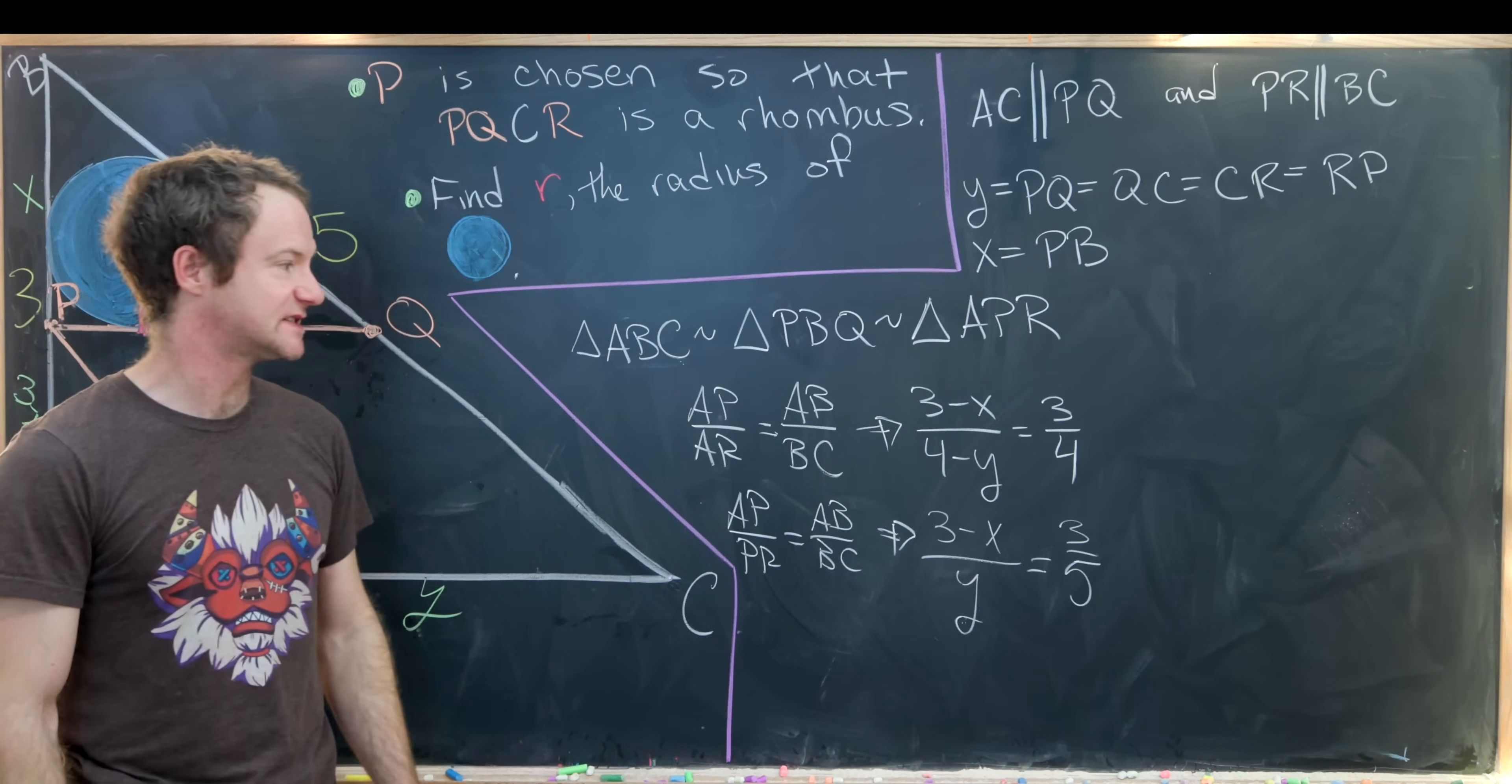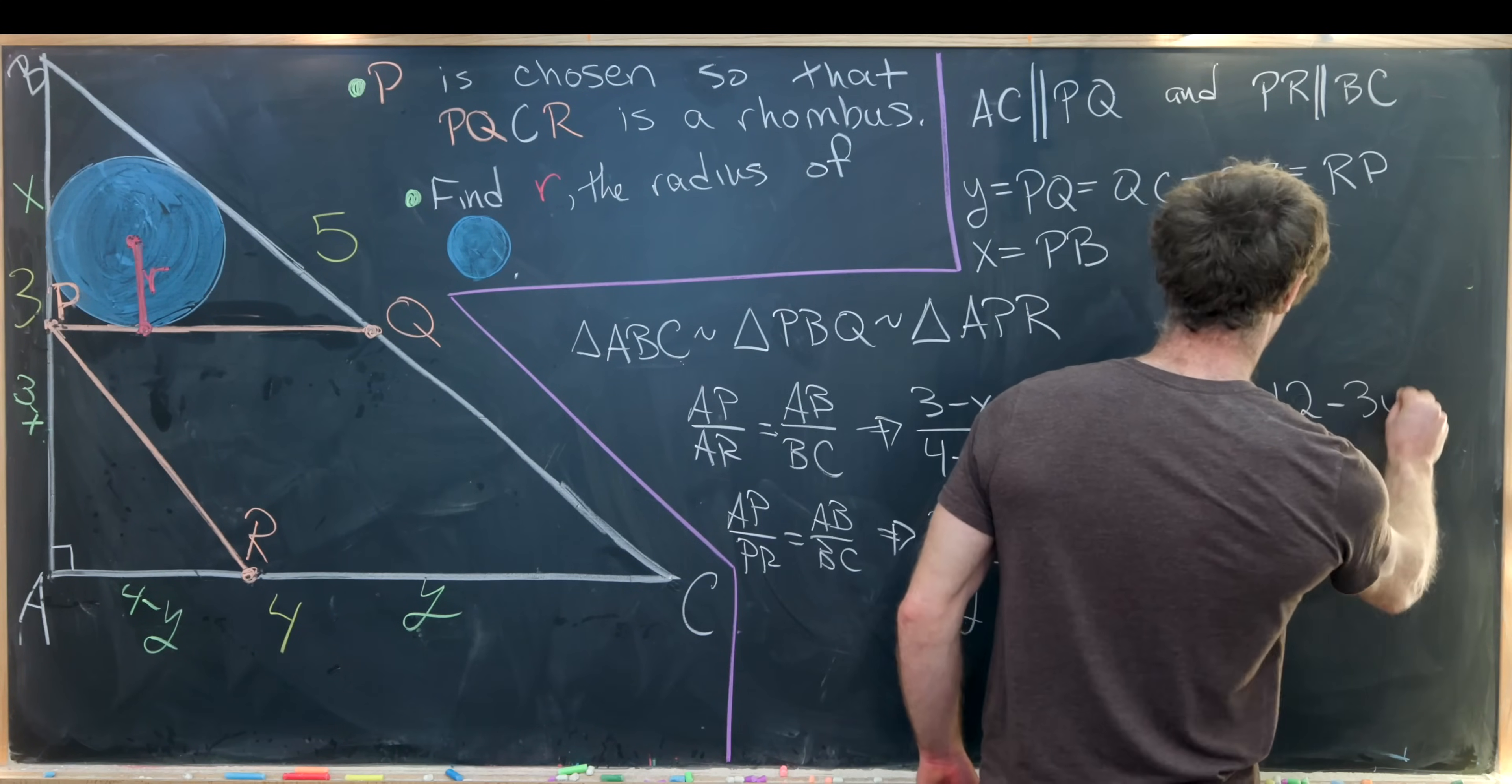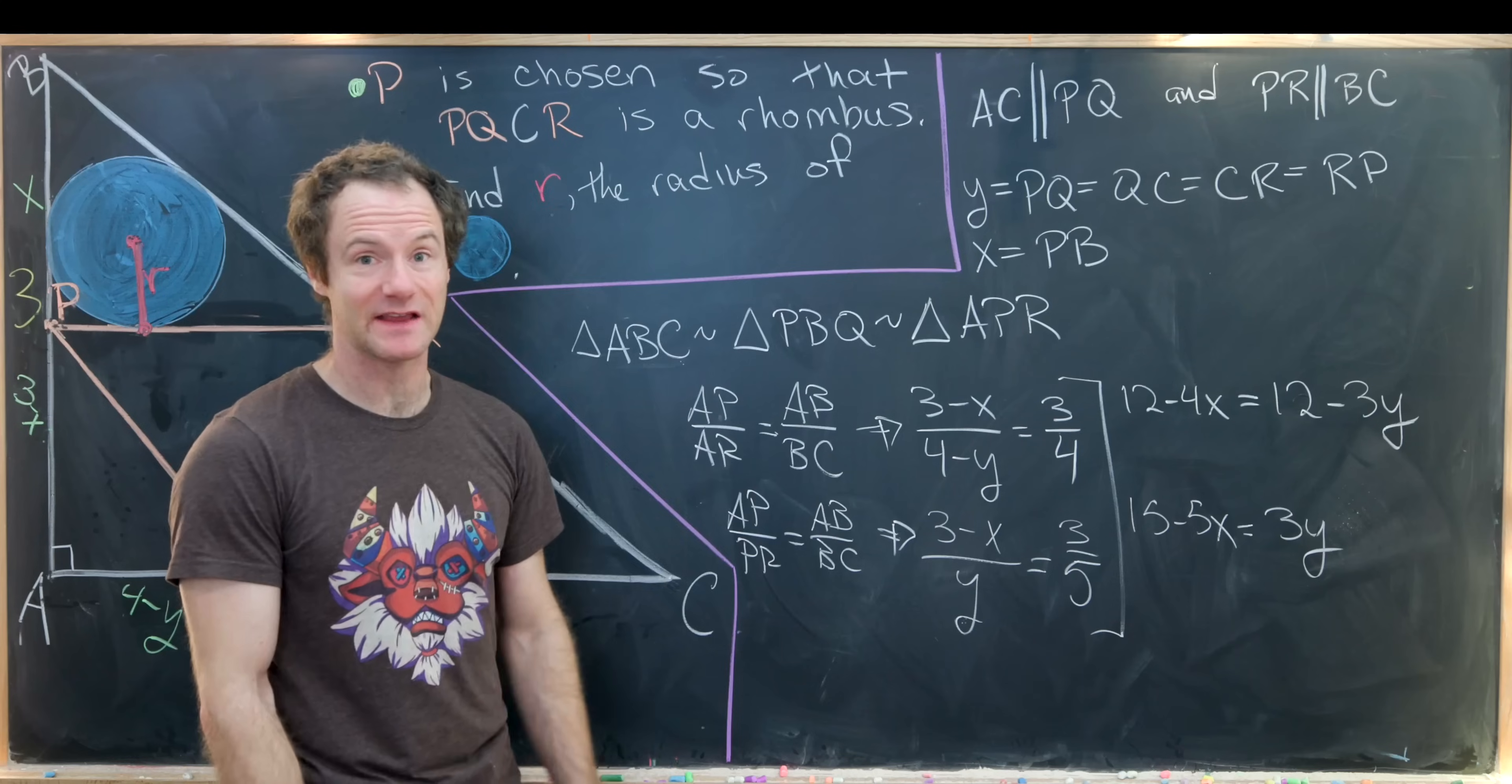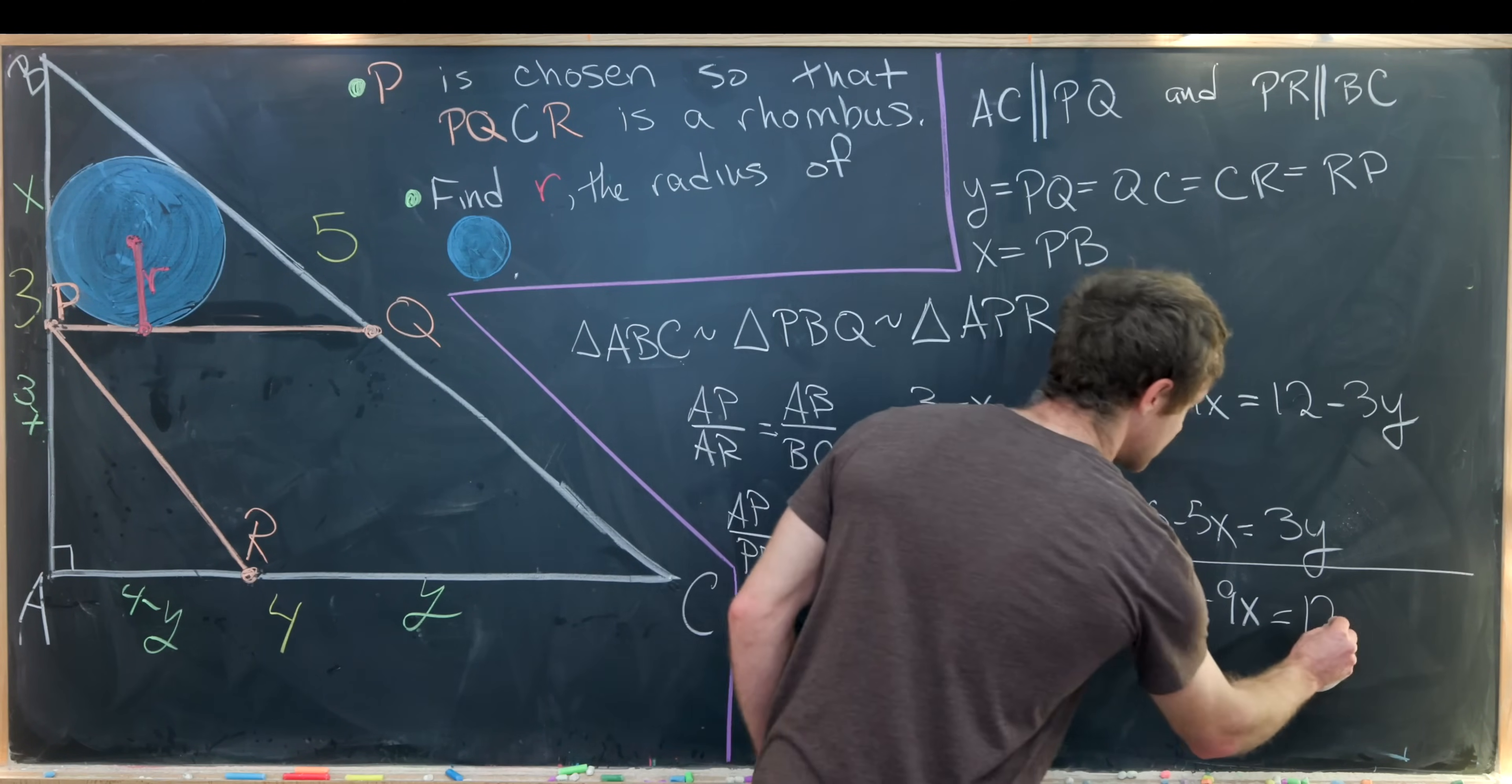So we have a nice system of equations for X and Y, which can be solved pretty easily. We'll clear the fractions first by cross multiplying. That'll give us 12 minus 4X equals 12 minus 3Y. And then we'll have 15 minus 5X equals 3Y. And let's notice that this is set up for adding these two equations to cancel the Y. So we'll have 15 plus 12, that's 27, and then we'll have minus 9X equals 12.